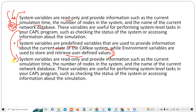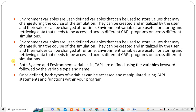Coming to environment variables — these are user-defined variables. Unlike system variables which are predefined, environment variables are user-defined and can be used to store values that may change during the course of a simulation. For example, you can set a maximum speed to 100 km/h or later change it to 120 km/h depending on requirements.